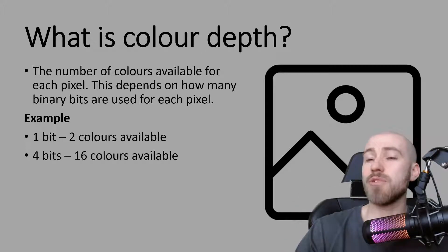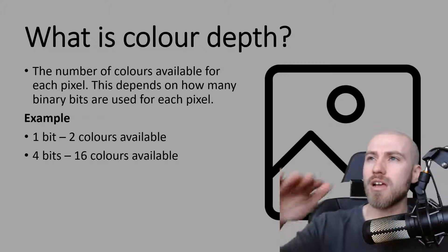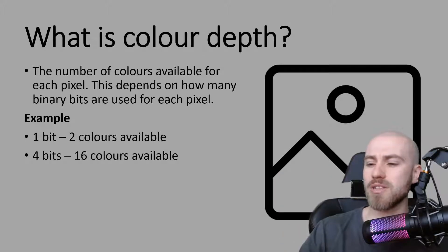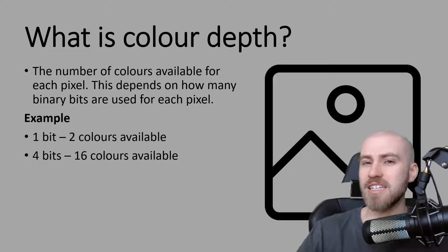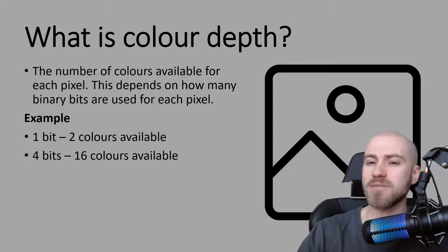And if we were to use 4 bits — so like a nibble — there are 16 different possible combinations, such as 0000, 0010, 0100, and so on. There are 16 different combinations you can make, which means there'd be 16 different colors available with 4 bits.